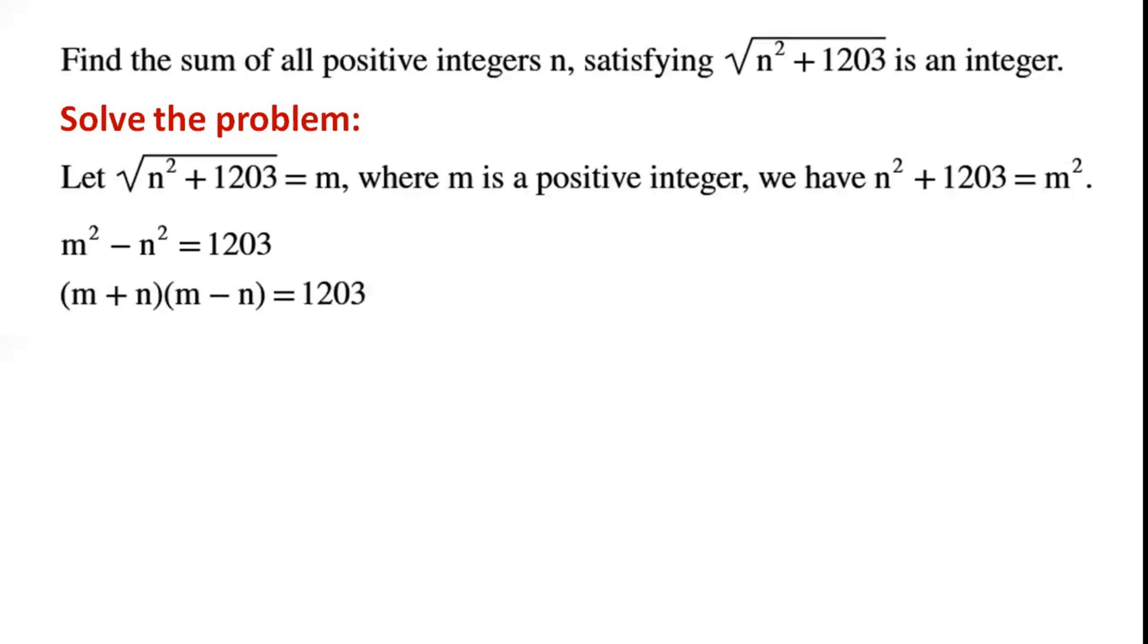This is a difference of two squares, so we can write (m + n)(m - n) = 1203. Factors of 1203: